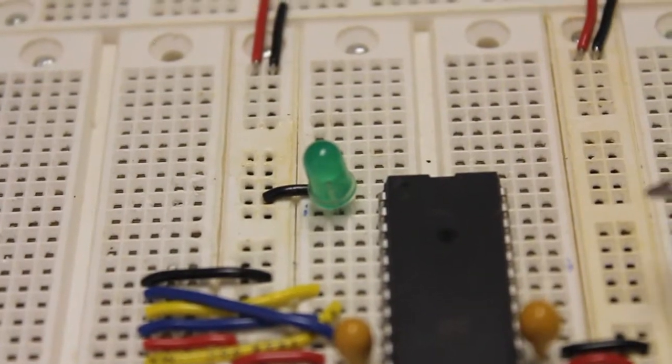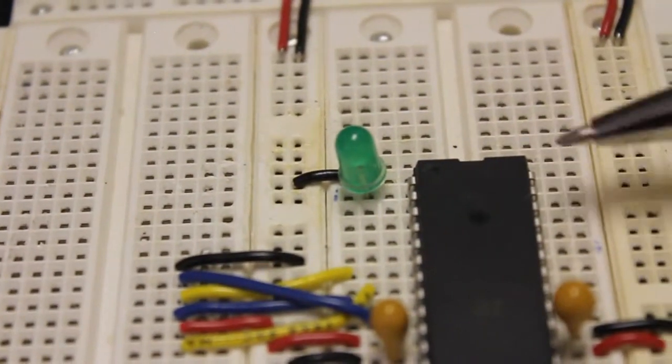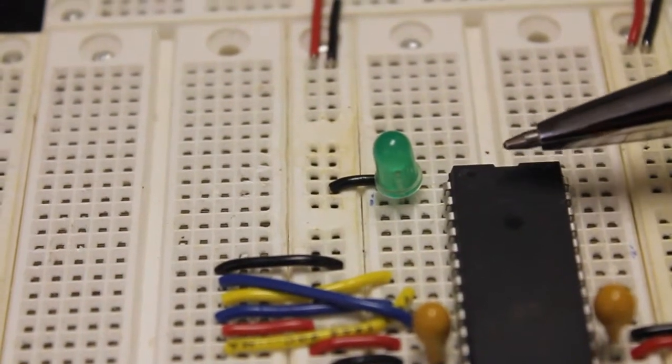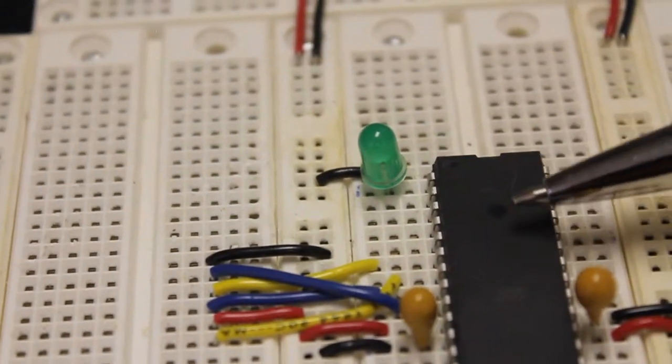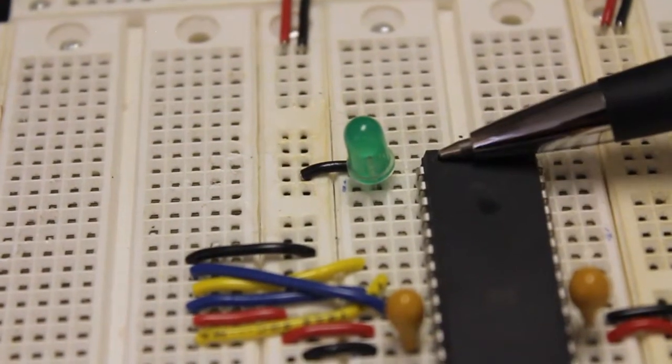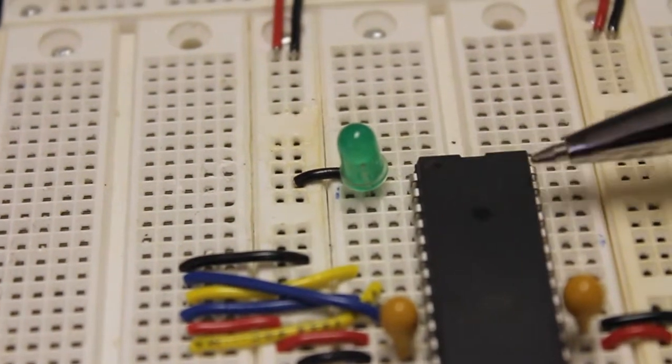And we will be applying this voltage to it through the chip's general purpose I/O pin. A general purpose I/O pin of a chip is an output that we can control through software. We can write some software that will turn that pin on, meaning apply power to it, or turn it off, eliminate that power from that pin.